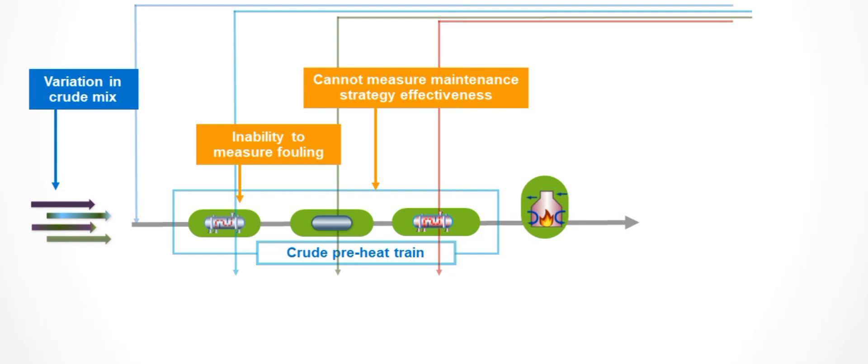Measuring fouling and fouling rates makes it difficult for even the best operators to identify the actual effectiveness of various maintenance strategies for the preheat train. Questions like whether mechanical cleaning is better, and at what intervals, are more difficult to identify with varying feed rates and energy inputs.